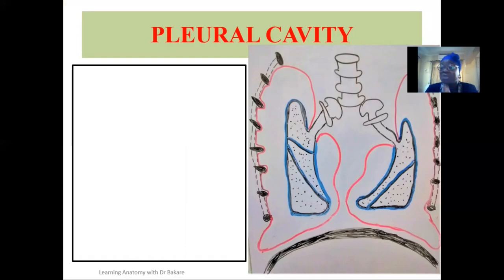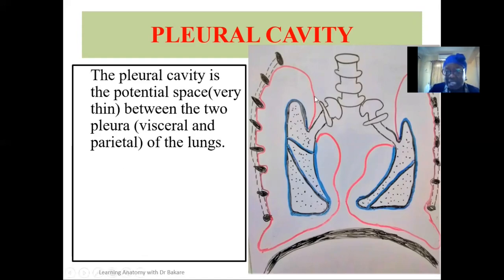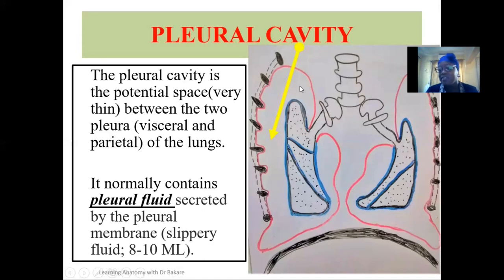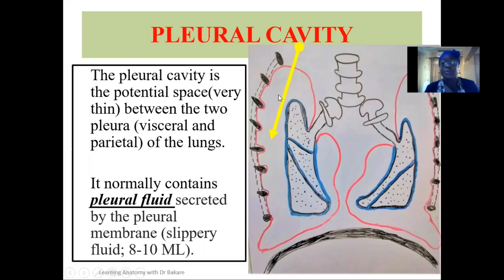So what is the pleural cavity? The visceral pleural attaches directly on the surface of the lungs and the parietal pleural lines the interiors of the thoracic cavity. The pleural cavity is the potential space created between the visceral pleural and the parietal pleural. This space is not empty — it is filled with pleural fluid, which is secreted by the parietal pleural.